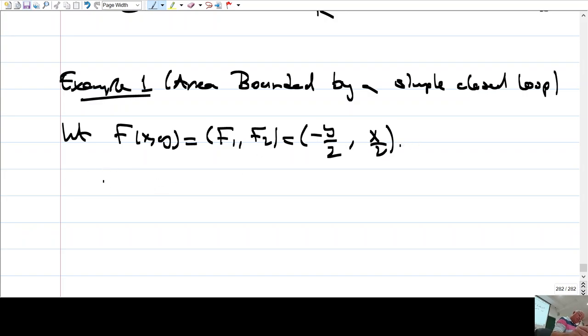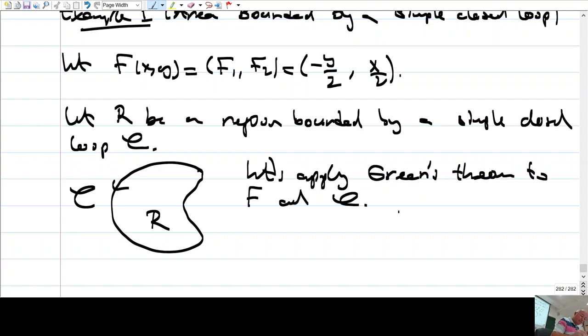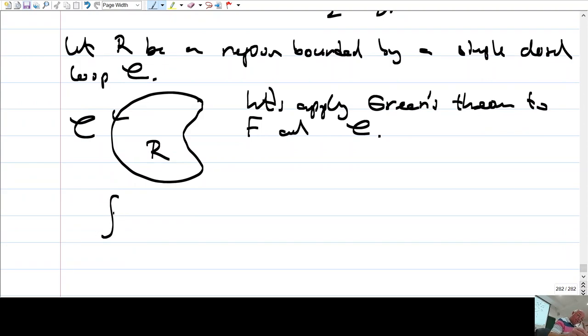And let R be a region bounded by a simple closed loop C. So the region looks like this, this is the boundary. Now Green's theorem applies to this F and C.